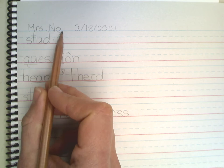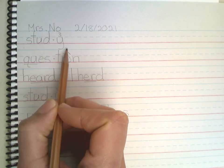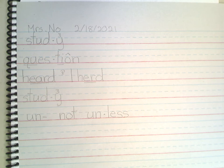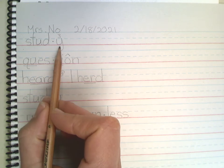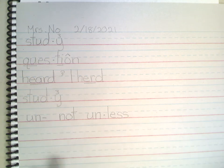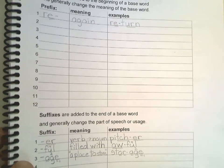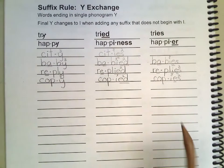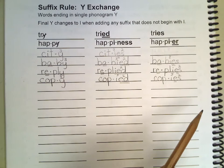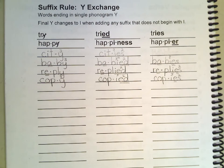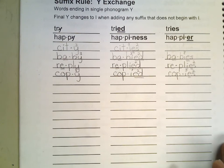Look at what we have at the end — we have a single y. If we want to add a suffix to a word that ends with a single y, what do we trade that y for? Good, we have to trade it for an i. So let's go to our y exchange page, which is page 20. We've already seen this with a few words. Hopefully we'll get used to it and then we won't even have to think about it — we'll just remember, oh, I need to do my y exchange.